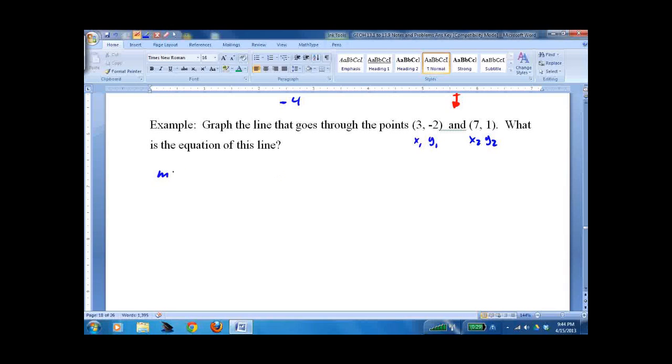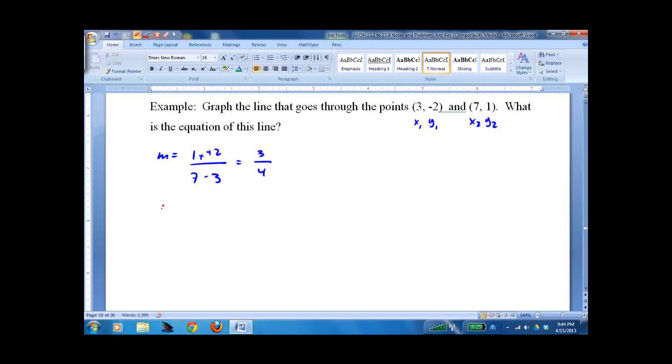So, m equals 1 minus negative 2, 7 minus 3, 3 fourths. I think I got my brain stuck on that slope. And then we write the equation. Y equals mx plus b.